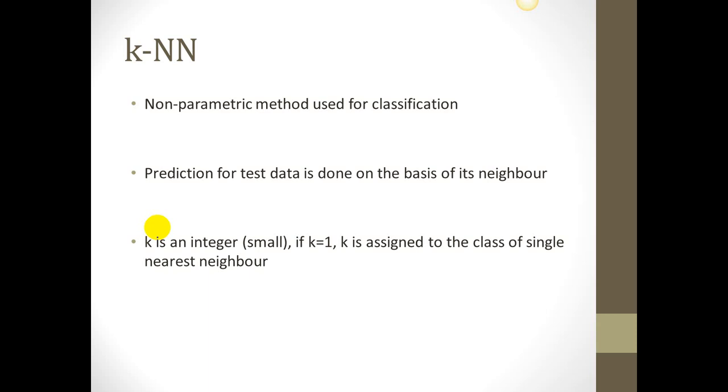An object is classified by majority vote of its neighbors, and k refers to the number of neighbors which we will consider, and it is a positive integer, typically small. If k is 1, then the object is simply assigned to the class of the nearest neighbor it has. Let's go through an example and this will make our understanding about k-NN more clear.